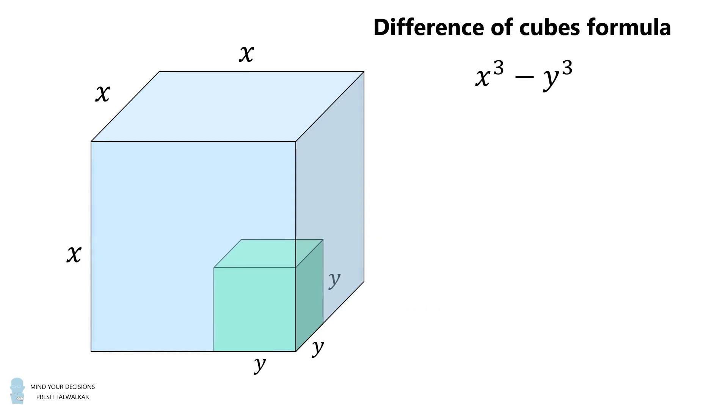x cubed minus y cubed will be the difference in volumes of these cubes. One way to express this volume is x cubed minus y cubed. The other way is to look at the volume that remains from the larger cube when we subtract the volume of the smaller cube. We can calculate this volume by looking at the sum of three different cuboids. One cuboid has dimensions of x, x, and x minus y. This will have a volume that's equal to x minus y, the quantity multiplied by x squared.